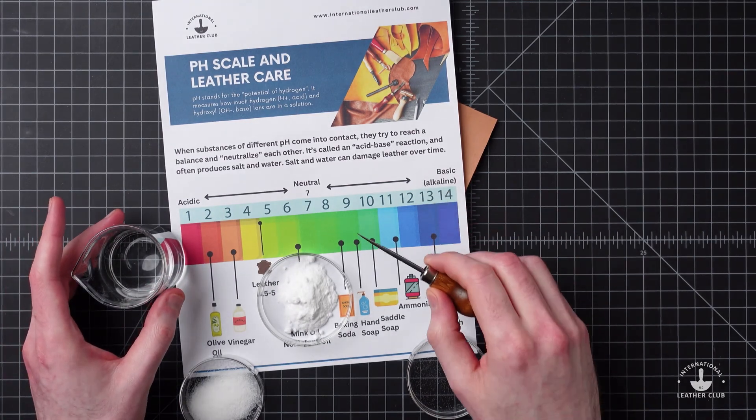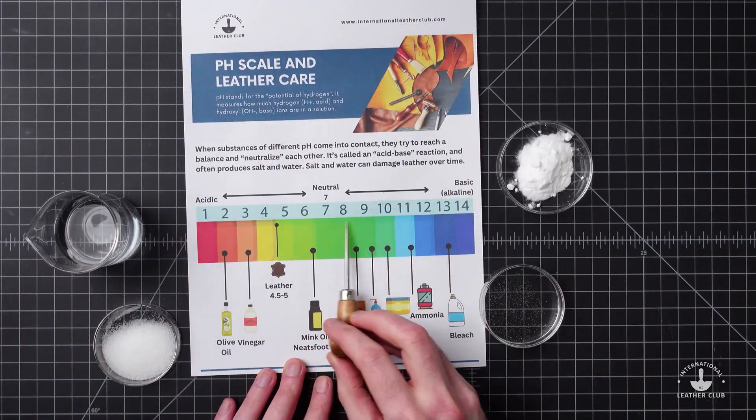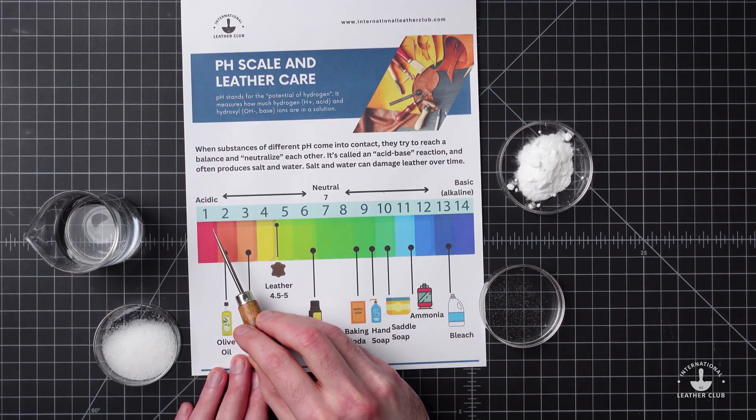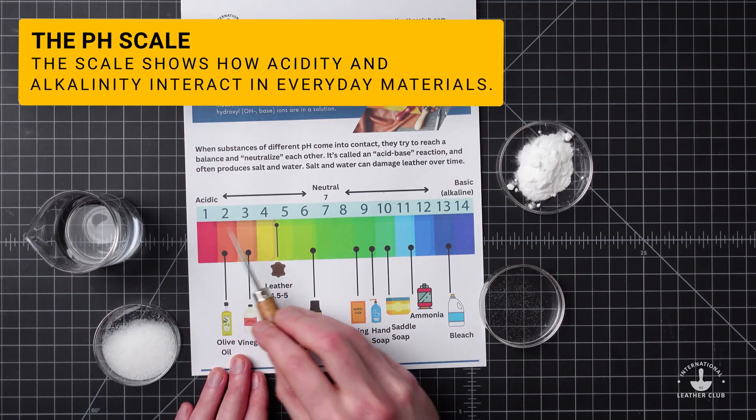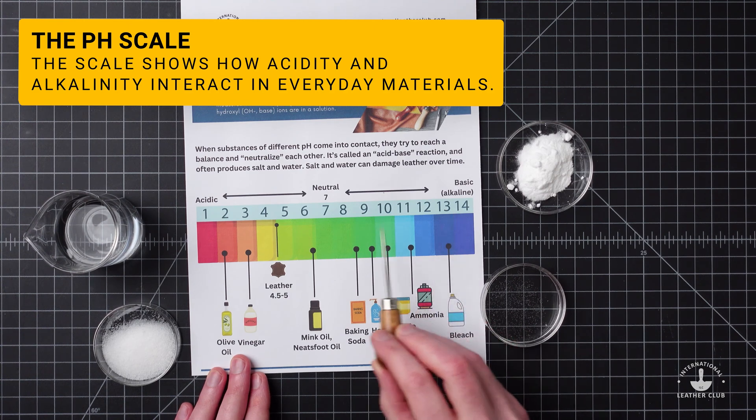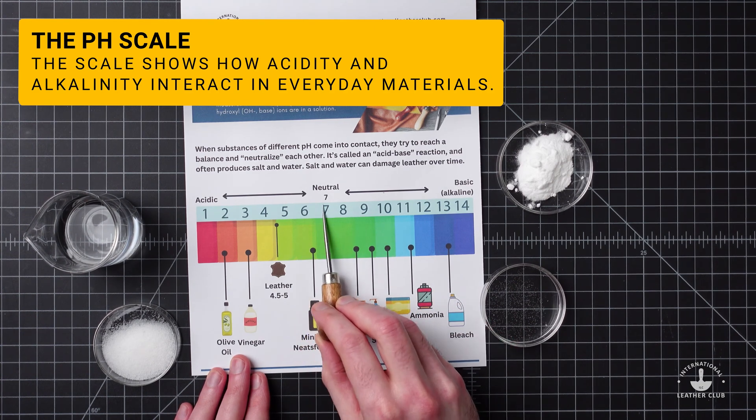Let's check out the pH scale. The pH scale runs from 1 to 14. On the left it is more acidic, and on the right it's more basic or alkaline. In the middle it's neutral - that's around 7.